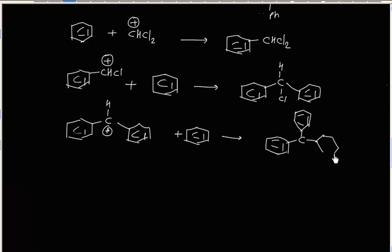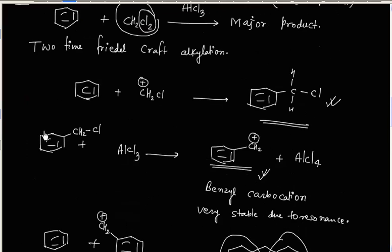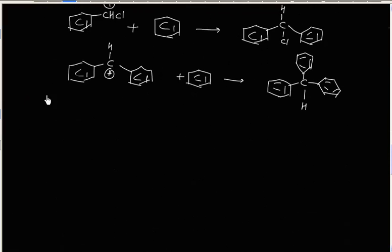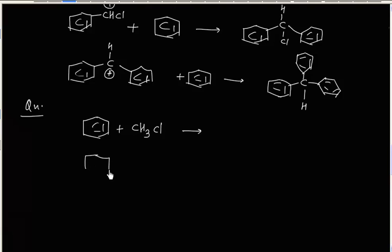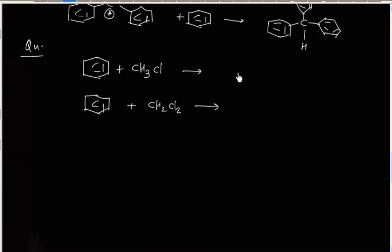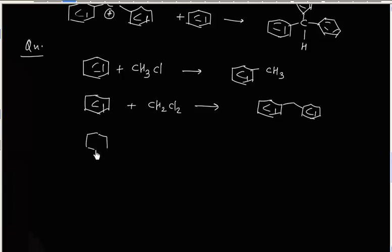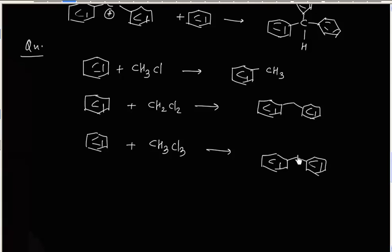To summarize: if benzene reacts with CH3Cl, one phenyl group is added. With CH2Cl2, two phenyl groups are added. With CHCl3, three phenyl groups are added — each chlorine is replaced by a phenyl group.